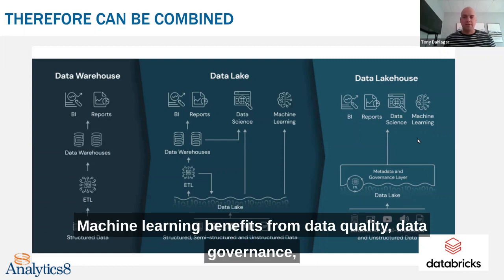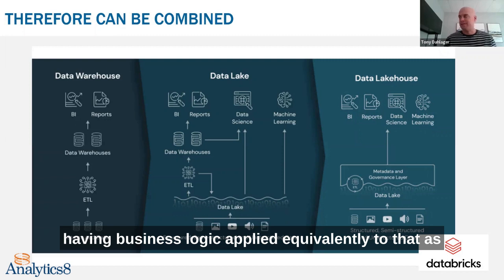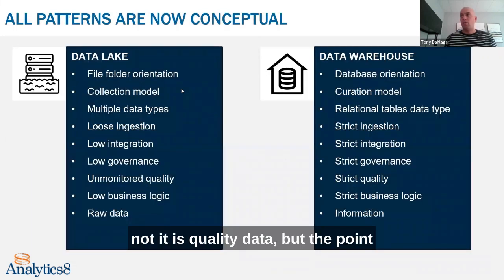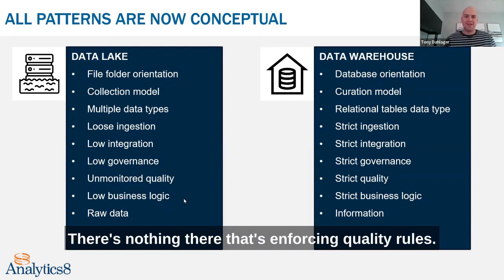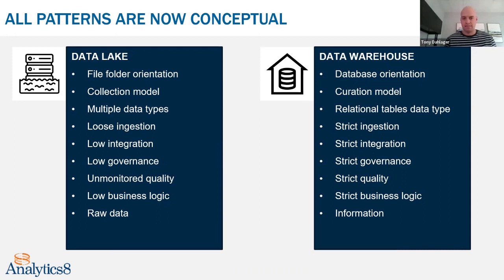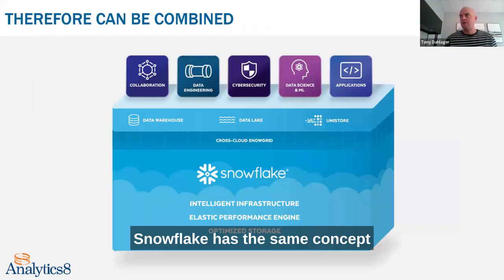Machine learning benefits from data quality, data governance, and having business logic applied — equivalently to the data used in BI as well. The point of a data lake is that it's unmonitored; there's nothing enforcing quality rules. The data may be of high quality in the lake, but there are no processes built in to improve or guarantee that quality.